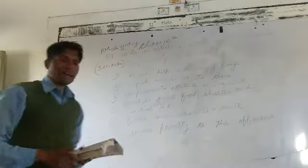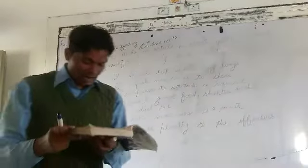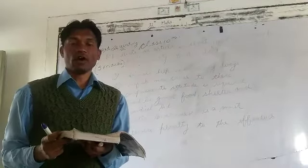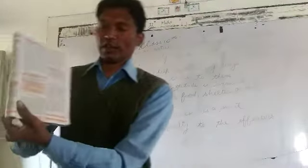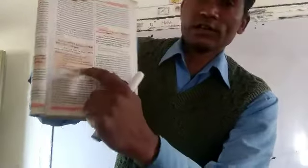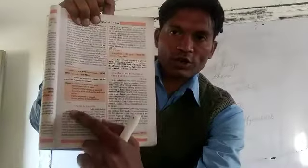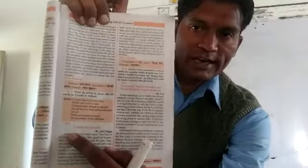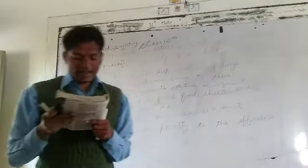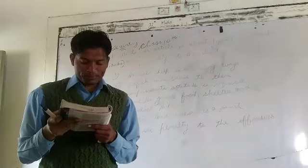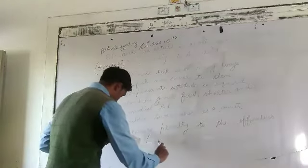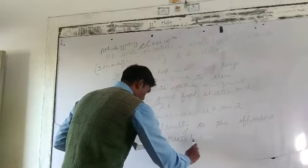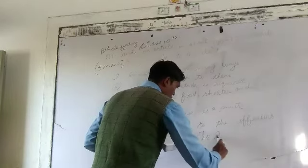Let us start. Write an article in about 150 words on the given topic by using the following clues. See this question, all of you — visualize it. Write an article in about 100 to 150 words on cruelty to animals. Cruelty to animals.